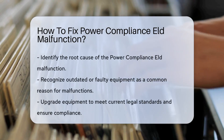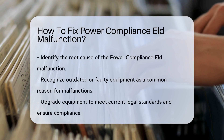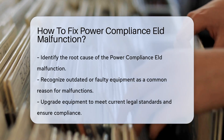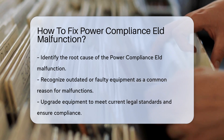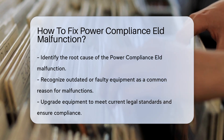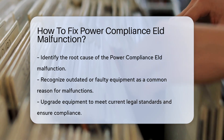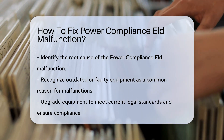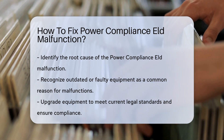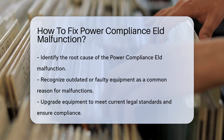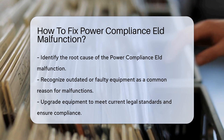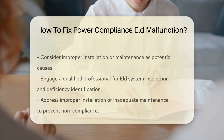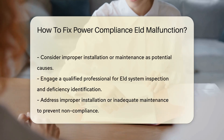When facing a power compliance ELD malfunction, it's essential to first identify the root cause of the issue. This type of malfunction typically occurs due to a failure to meet the necessary legal requirements for power compliance ELD. One common reason for this is outdated or faulty equipment that no longer meets the current standards set by the relevant authorities. In such cases, it is crucial to upgrade the equipment to ensure compliance with the law.